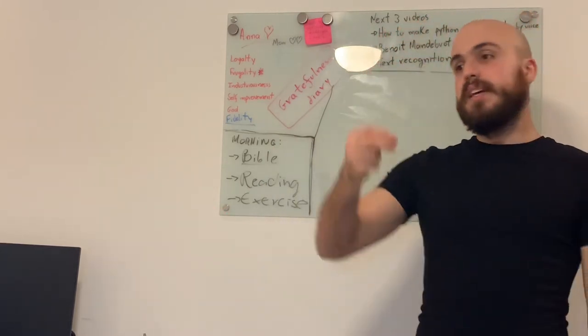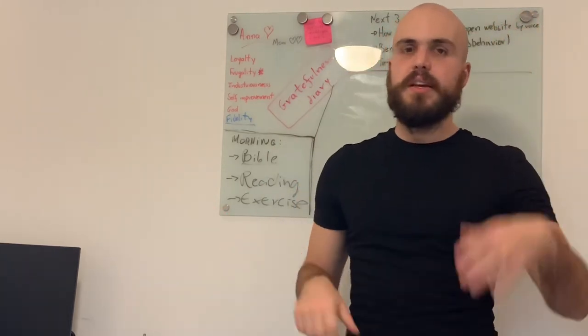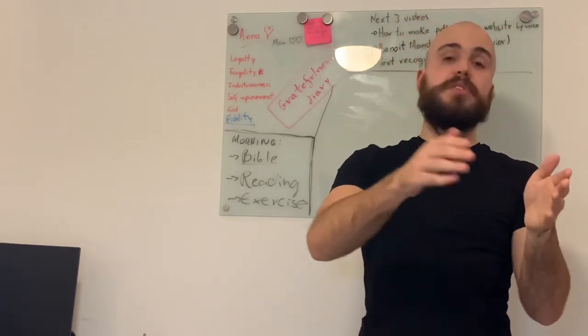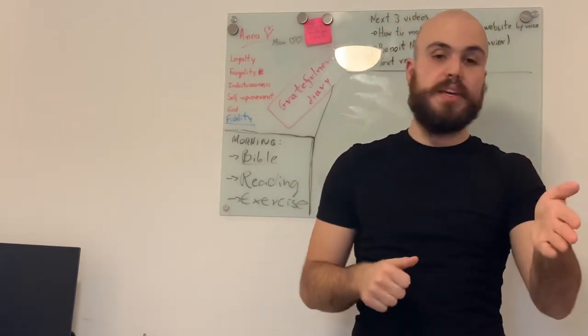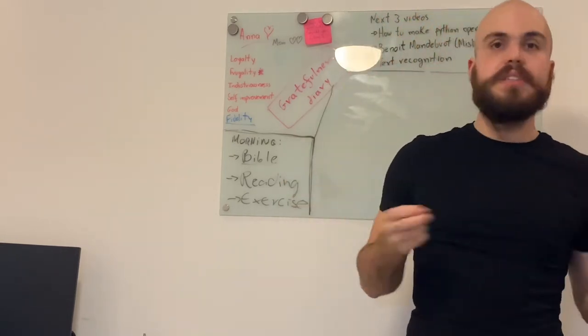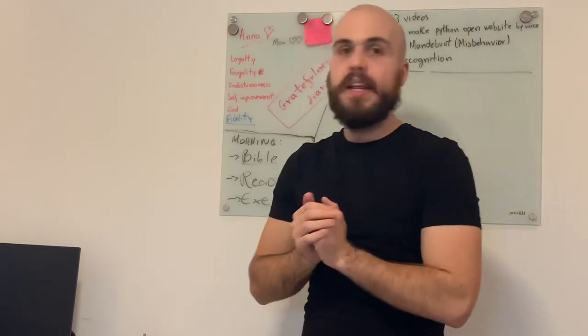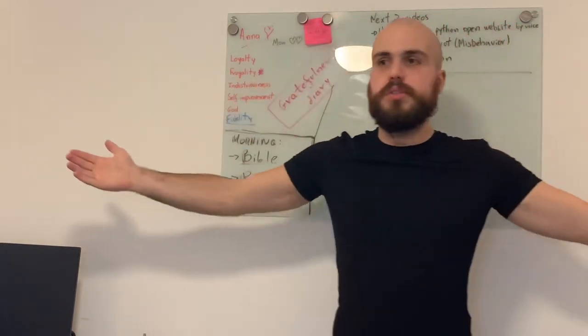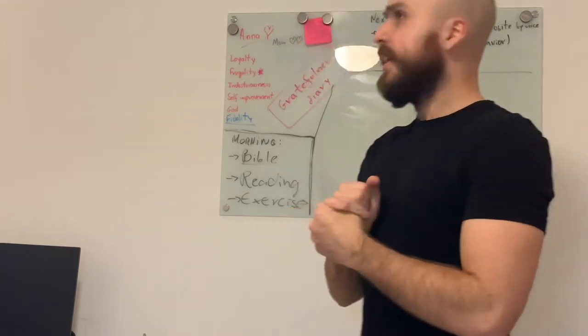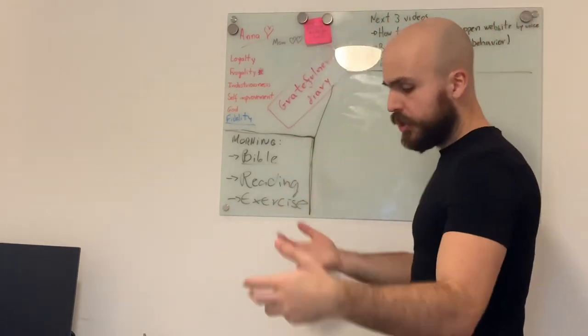It means that the observations are not independent. The observations from today will impact, will probably impact the observation of tomorrow. So the volatility today will likely impact the volatility of tomorrow. They are not independent, they are not like a random walk, a Brownian motion.